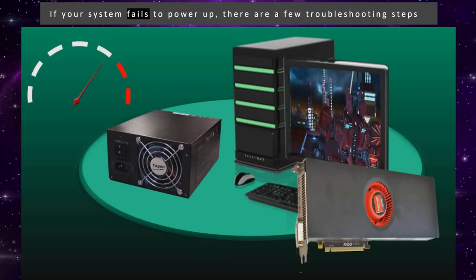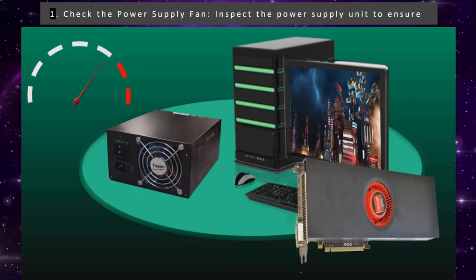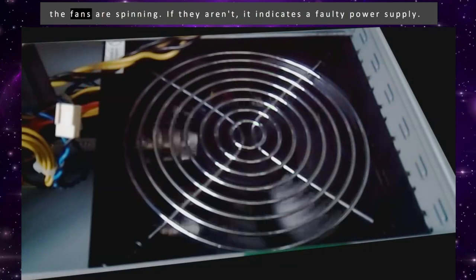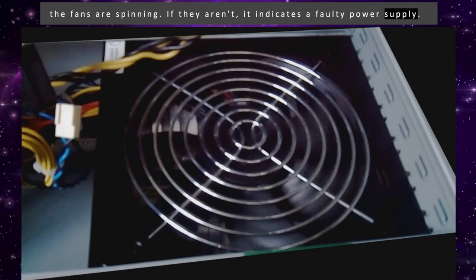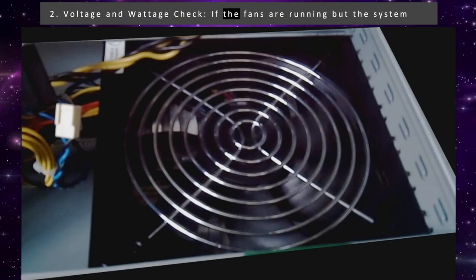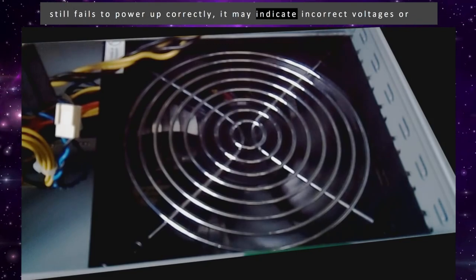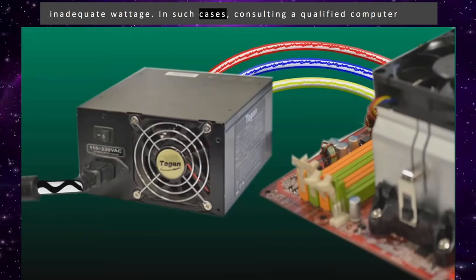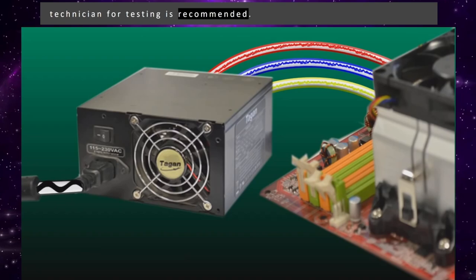If your system fails to power up, there are a few troubleshooting steps to consider. First, check the power supply fan — inspect the power supply unit to ensure the fans are spinning. If they aren't, it indicates a faulty power supply. Second, perform a voltage and wattage check. If the fans are running but the system still fails to power up correctly, it may indicate incorrect voltages or inadequate wattage. In such cases, consulting a qualified computer technician for testing is recommended.